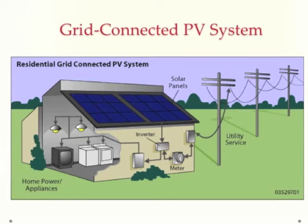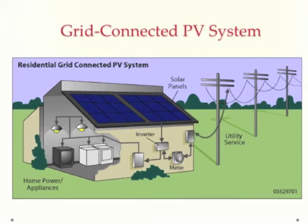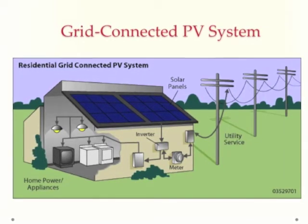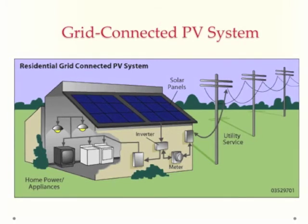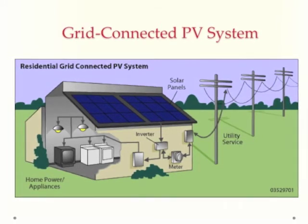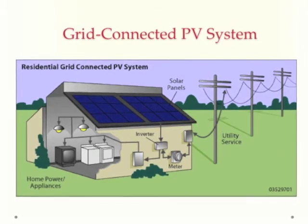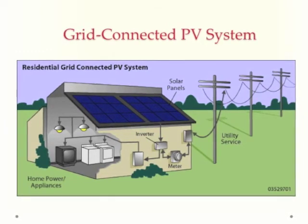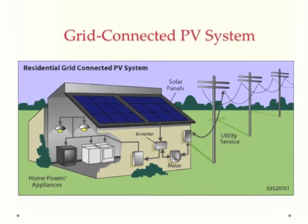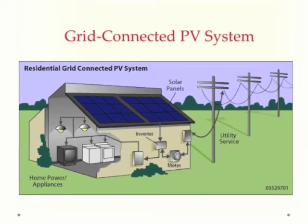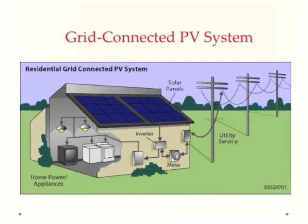Each of these rooftop arrays are part of a grid-connected PV system. During the day when there's plenty of sunlight, the PV array produces electricity which can be used by the residents or business, or can be sold to the electric utility. At night, when there is no sunlight and therefore no PV-generated electricity, residents or businesses draw electricity from the grid as usual. In this sense, the grid becomes the storage for these rooftop grid-connected PV systems.